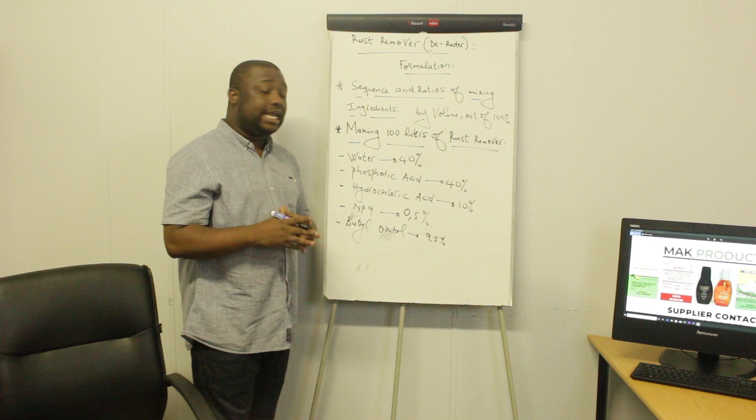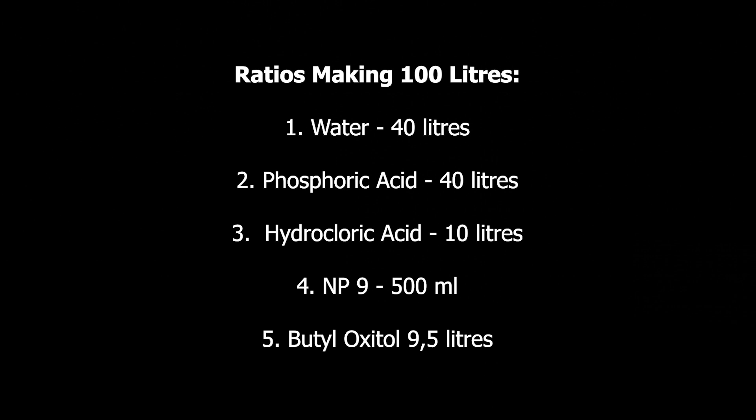Butyl oxytone should be 9.5% of your total volume. Now let us figure out a case whereby we're manufacturing 100 liters of rust remover.